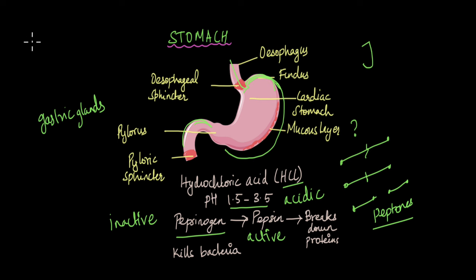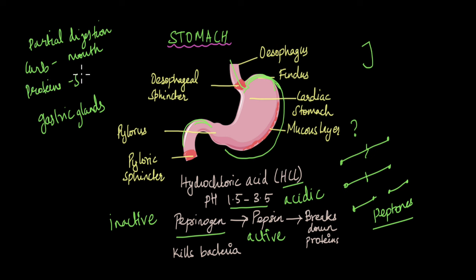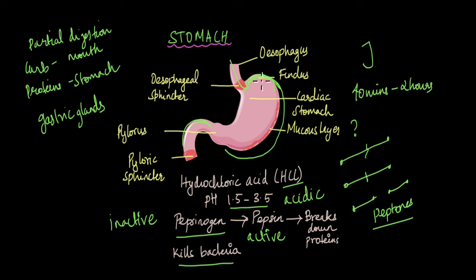So, we can say that the partial digestion of carbohydrates — especially starch — occurs in the mouth itself with the help of salivary amylase, and the partial digestion of proteins begins in the stomach with the help of pepsin. Apart from converting pepsinogen to pepsin, the hydrochloric acid in our stomach also kills bacteria and other harmful microorganisms that have entered the body through food, thereby preventing food-borne illnesses. In the stomach, food spends around 40 minutes to 2 hours, during which the smooth muscles churn and mix the food thoroughly with hydrochloric acid and gastric juices so that proteins are digested into smaller peptones. Through the pyloric sphincter, the food then enters the small intestine, which we will talk about in another video.